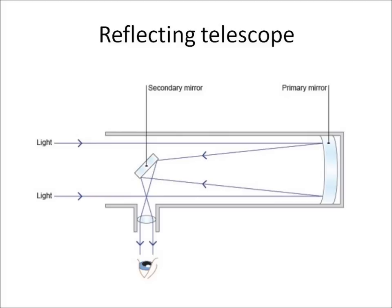A reflecting telescope doesn't have an objective lens. Instead, it has two mirrors it uses: a large primary mirror, which is curved, and a small secondary mirror, which is flat.